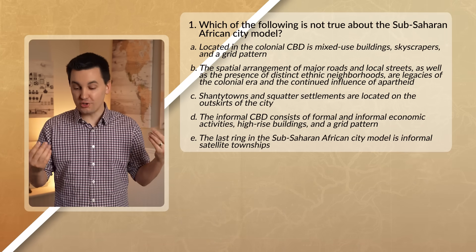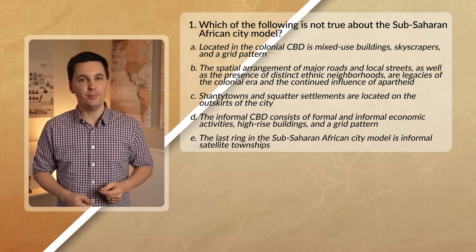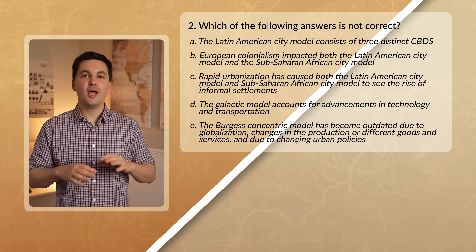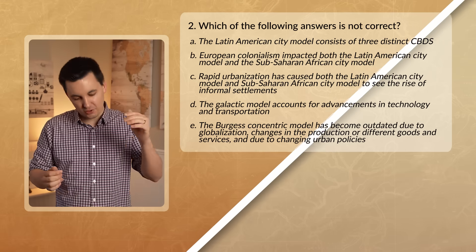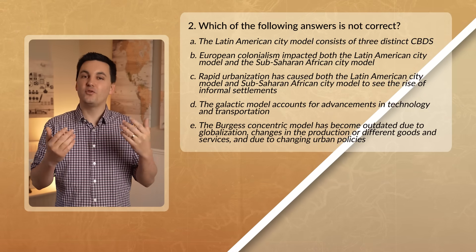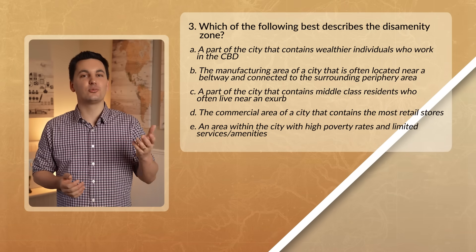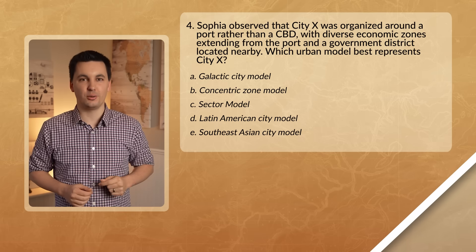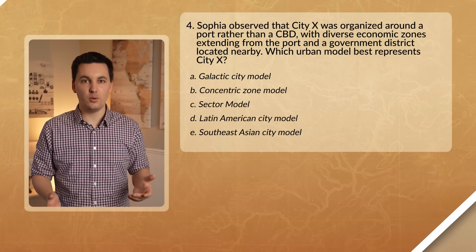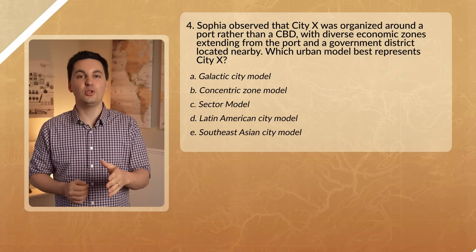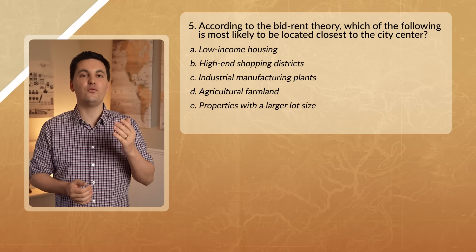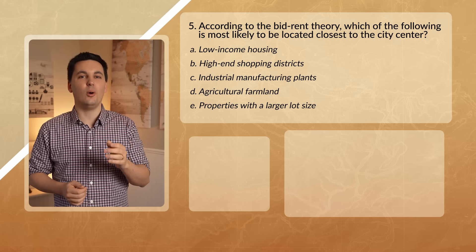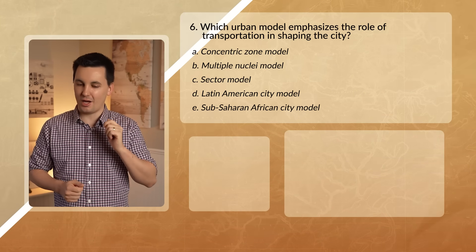Alright, now hopefully your head isn't spinning. We just talked about a bunch of different city models and cities around the world, and now comes the time to practice what we've learned. Answer the questions on the screen and check your answers in the comment section down below. If you found value in this video, consider subscribing and supporting the channel. If you do need more help with anything AP Human Geography related, check out my Ultimate Review Packet for a bunch of exclusive resources to help you not only get an A in your class, but a five on the national exam. As always, I'm Mr. Sin — thank you so much for watching, and I will see you next time online.